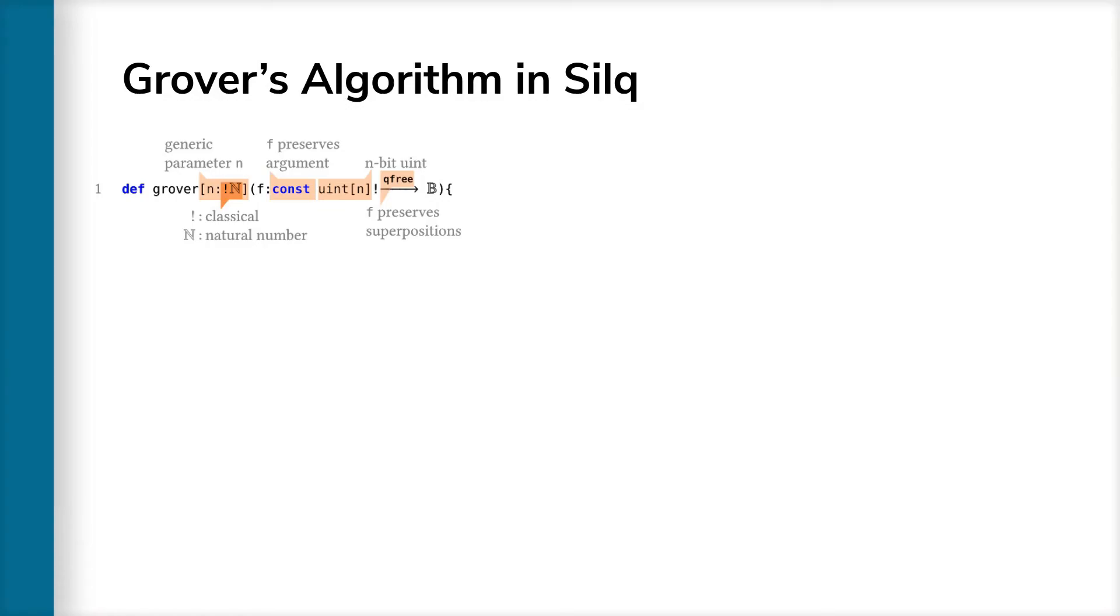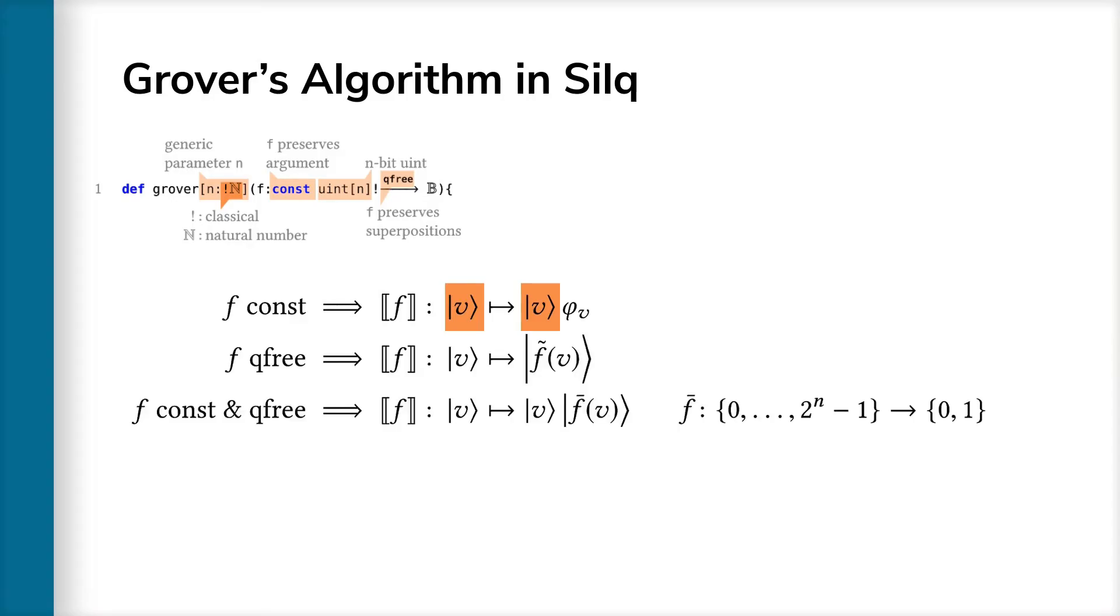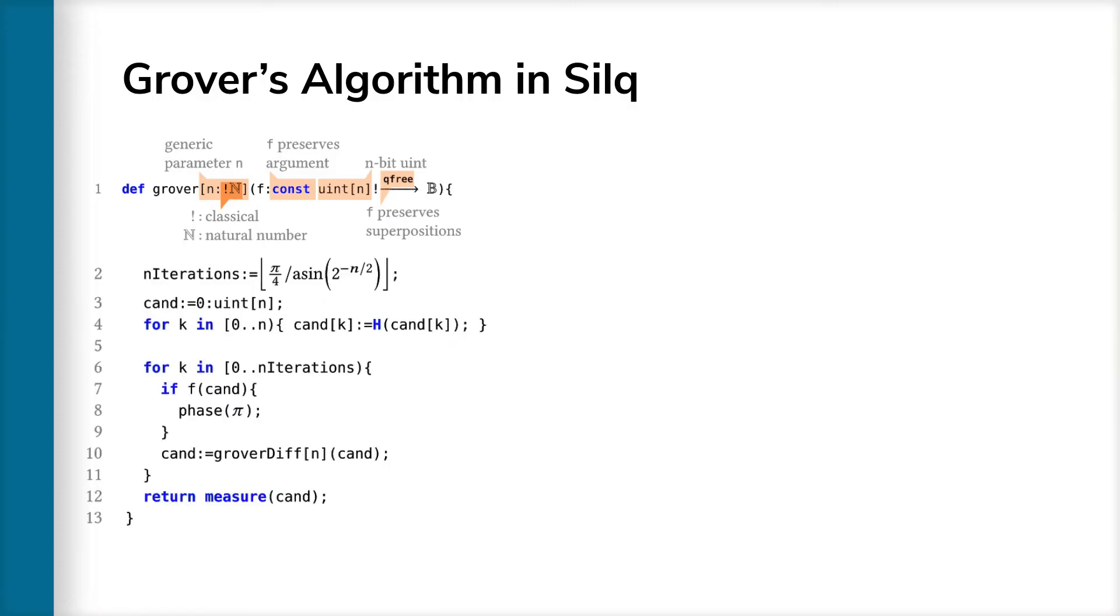The parameter of function f is also annotated as const, another novel annotation introduced by Zilk. Const means that f preserves its input, which is highlighted in orange. Here, phi v indicates the output of f. Because f is both const and q-free, we can combine both pieces of information to derive more about f, namely that it preserves its input v and that its output can be described by a function f bar, which operates on classical values. Here, f bar corresponds to the function describing our search problem, introduced initially simply as f.